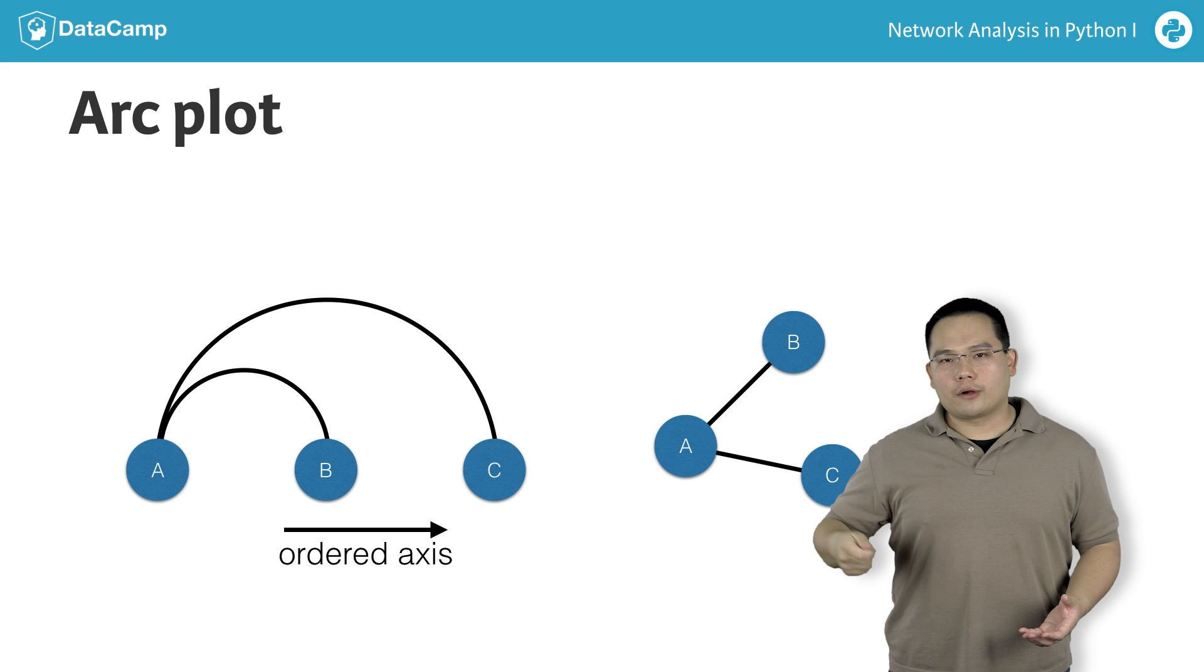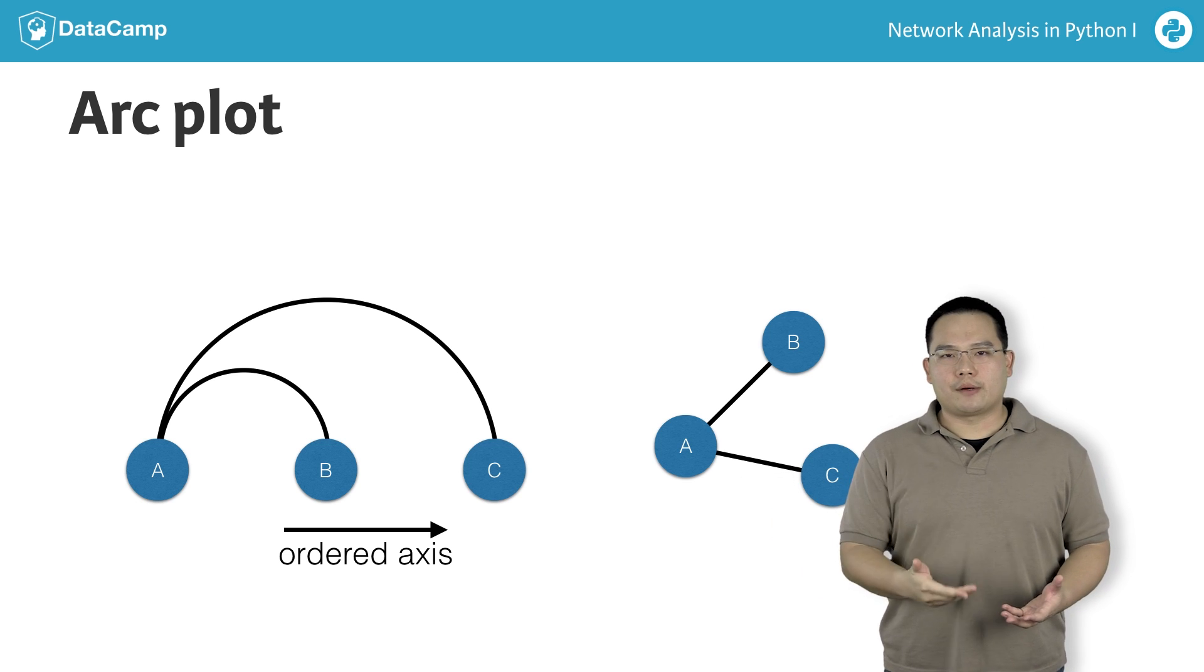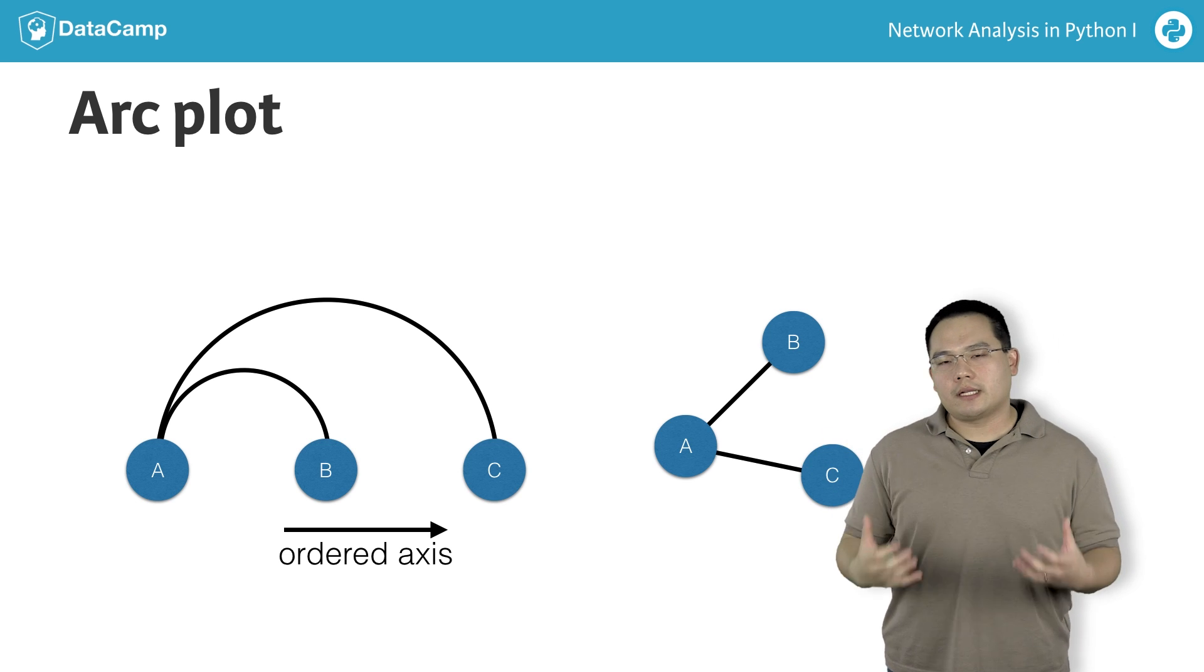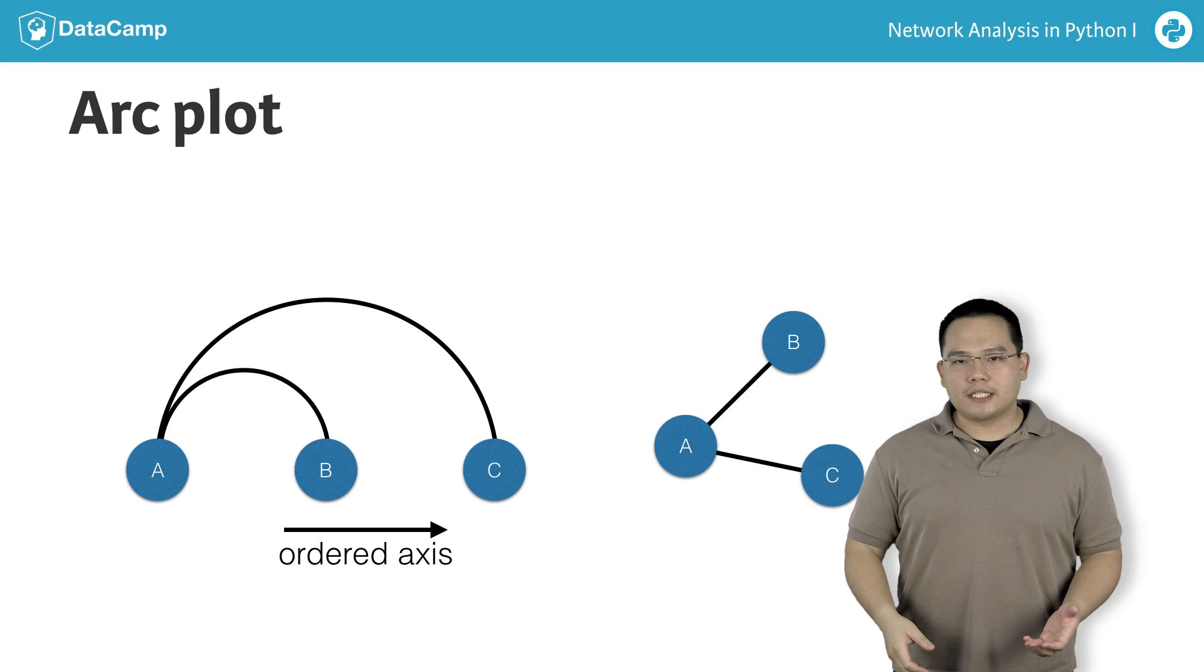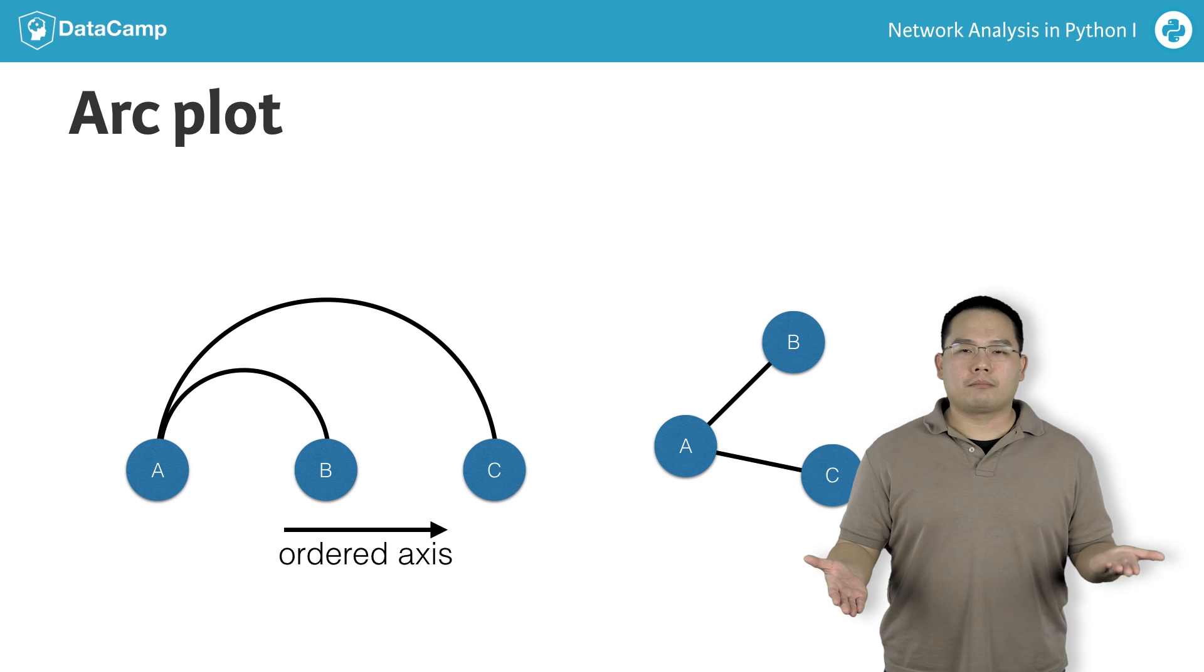If the nodes are ordered according to some sortable rule, for example, age in a social network of users, or otherwise grouped together by geographic location in a map for a transportation network, then it will be possible to visualize the relationship between connectivity and the sorted or grouped property.